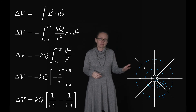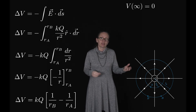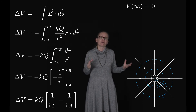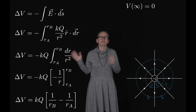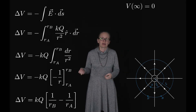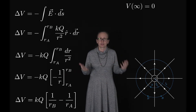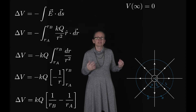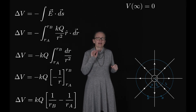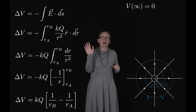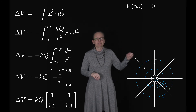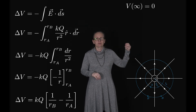To do that, we need to define a zero point. Just as with potential energy, we define the zero of voltage at an infinite distance from the charge causing the electric field. So at R = ∞, V = 0.